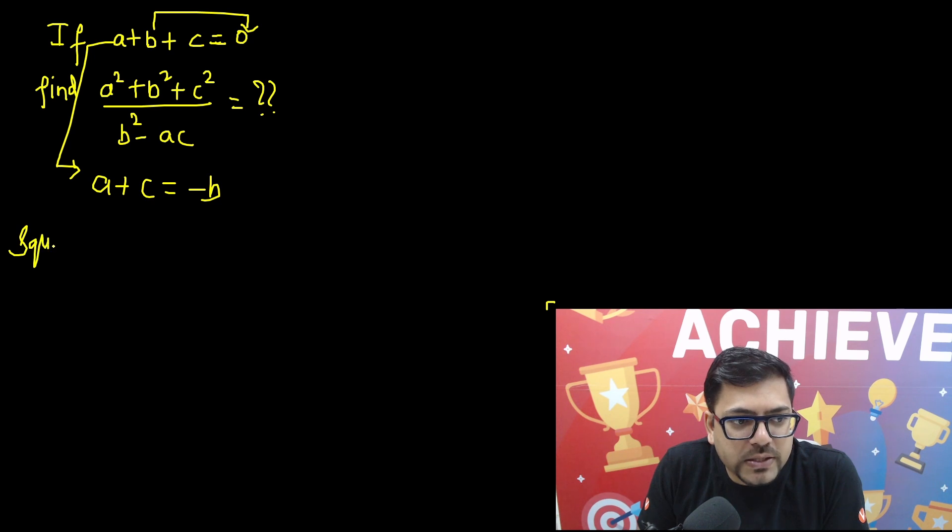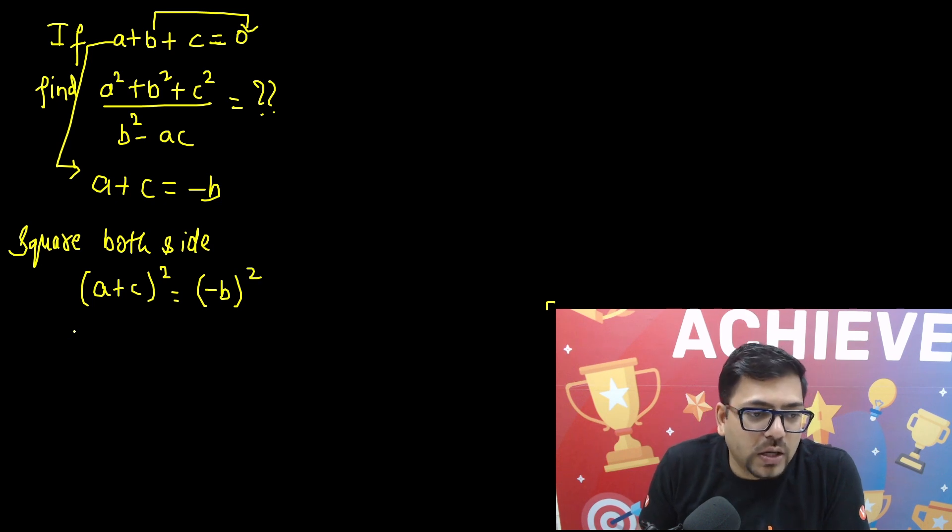Now just square both sides. So if you square both sides, what will you get? You will get a plus c whole square equals minus b whole square. So from here, a plus c whole square is a square plus c square plus 2ac and that equals b square.